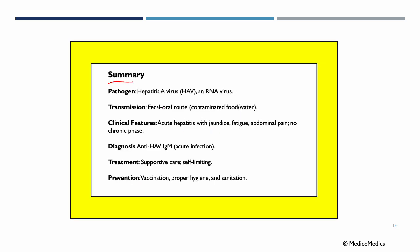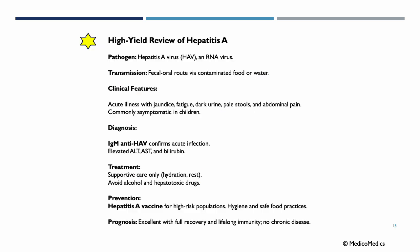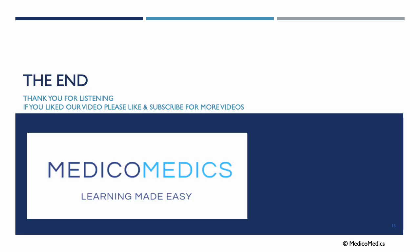In summary: the pathogen is the Hepatitis A virus, an RNA virus. Mode of transmission is the fecal-oral route via contaminated food or water. Clinical features are acute hepatitis with jaundice, fatigue, and abdominal pain — no chronic phase. Diagnosis is confirmed by anti-HAV IgM for acute infection. Treatment is supportive care, as it is self-limiting. Prevention includes vaccination, proper hygiene, and sanitation. Here is our high-yield review for Hepatitis A — med students, stop the video and review these. That's the end of this lecture, thank you for listening.